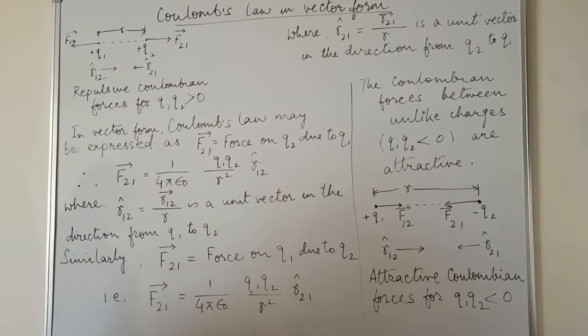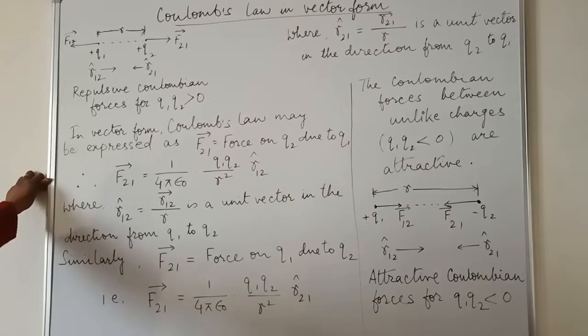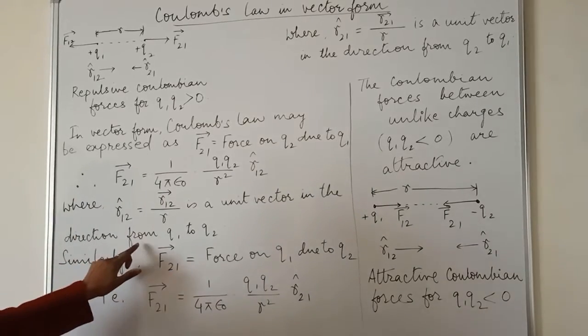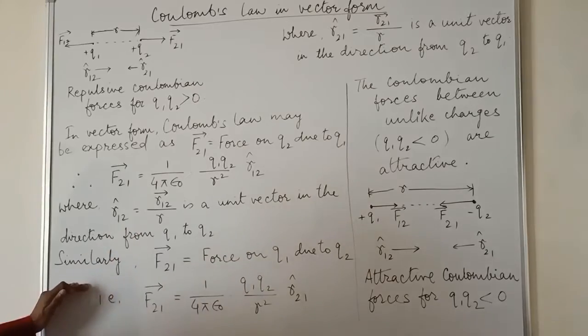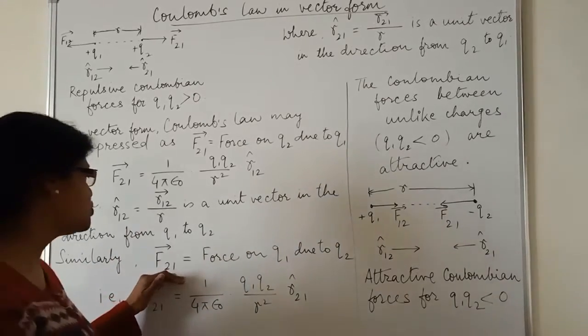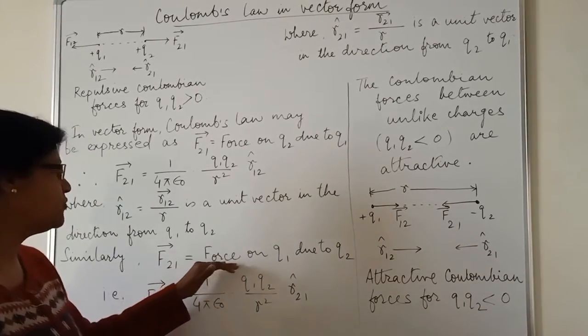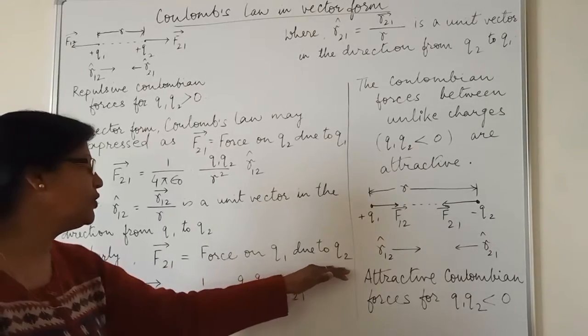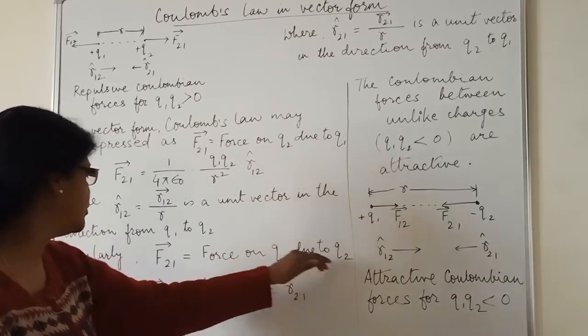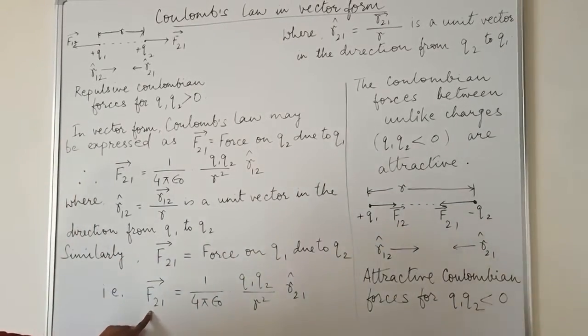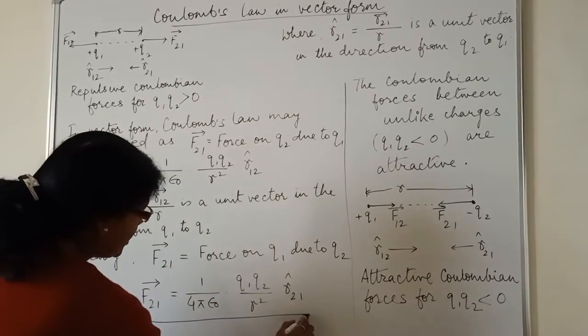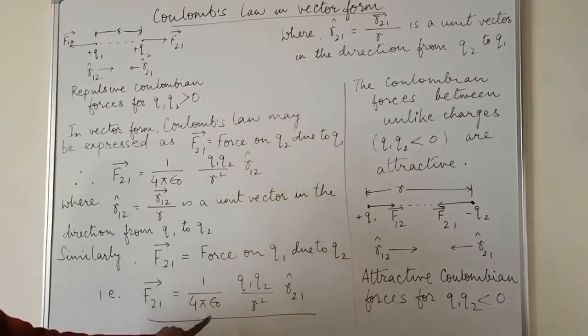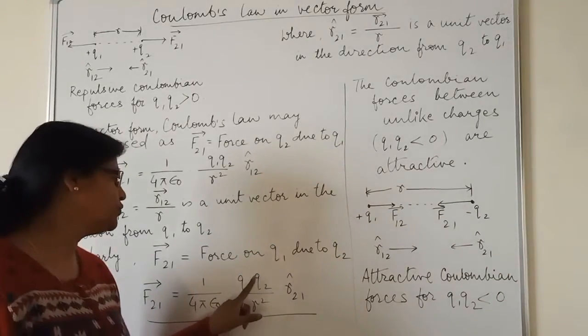Now this quantity is a unit vector in the direction from Q1 to Q2. Similarly, F21 is equal to 1 upon 4 pi epsilon naught into Q1, Q2 upon R square into R cap 21.